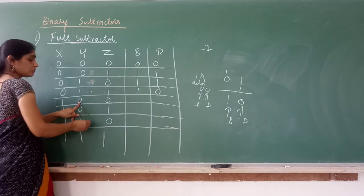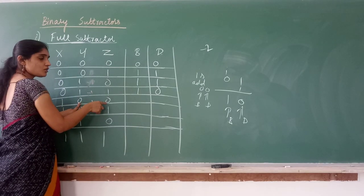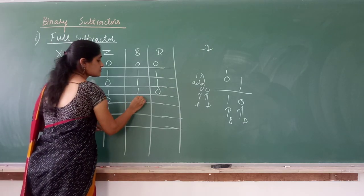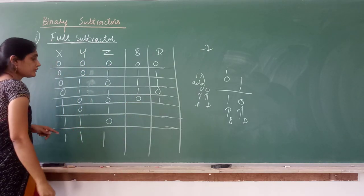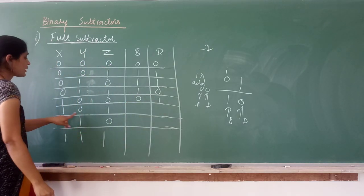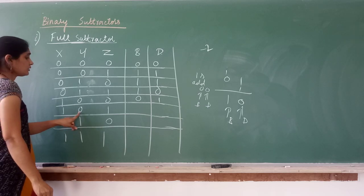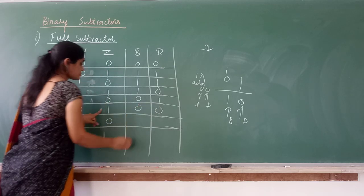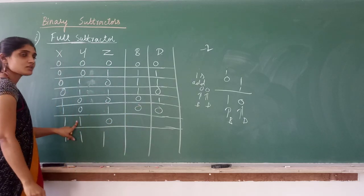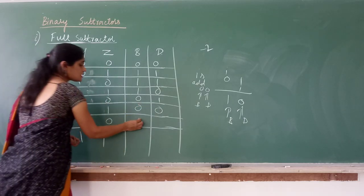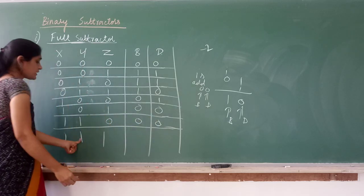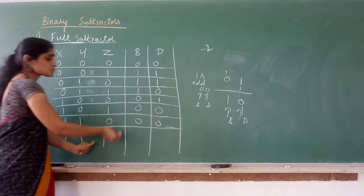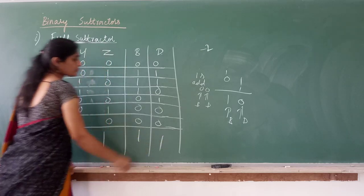For x=1,y=0,z=0: 1 minus 0 minus 0 equals 1, so borrow=0, difference=1. For x=1,y=0,z=1: 1 minus 0 is 1, then 1 minus 1 is 0, so borrow=0, difference=0. For x=1,y=1,z=0: 1 minus 1 is 0, then 0 minus 0 is 0, so borrow=0, difference=0. For x=1,y=1,z=1: 0 minus 1 equals minus 1, so borrow=1, difference=1.